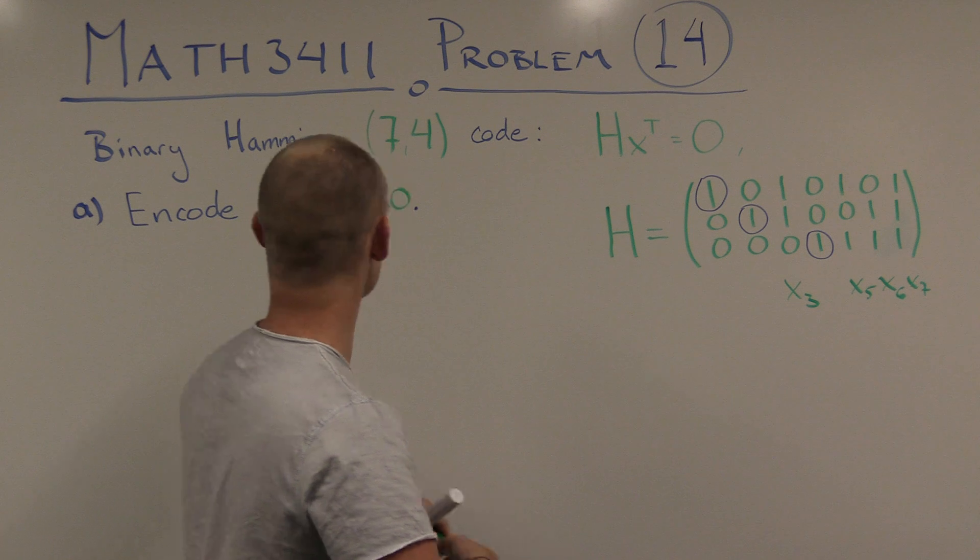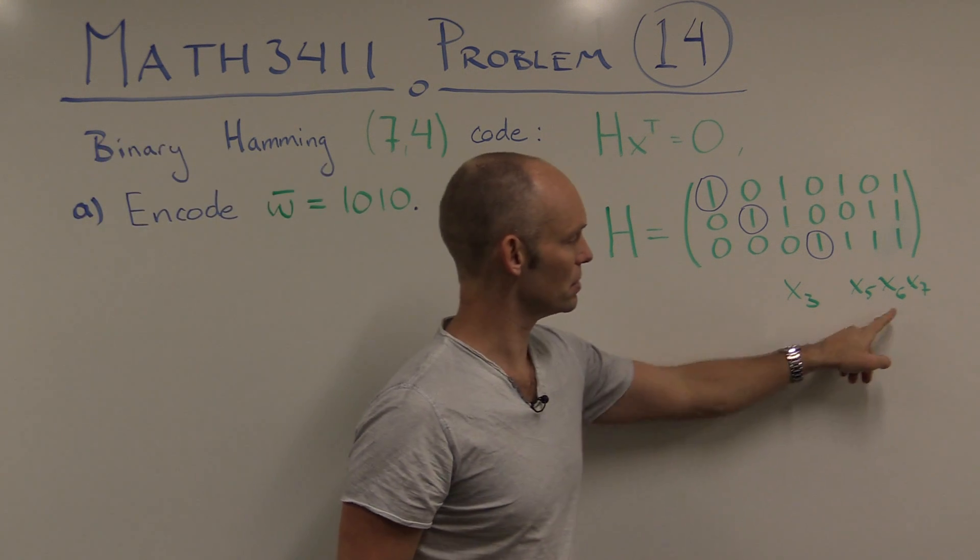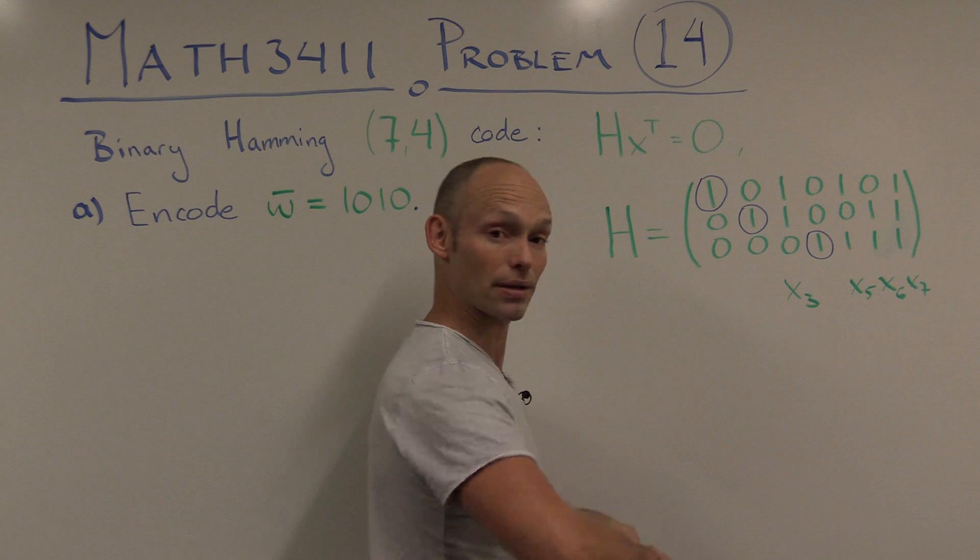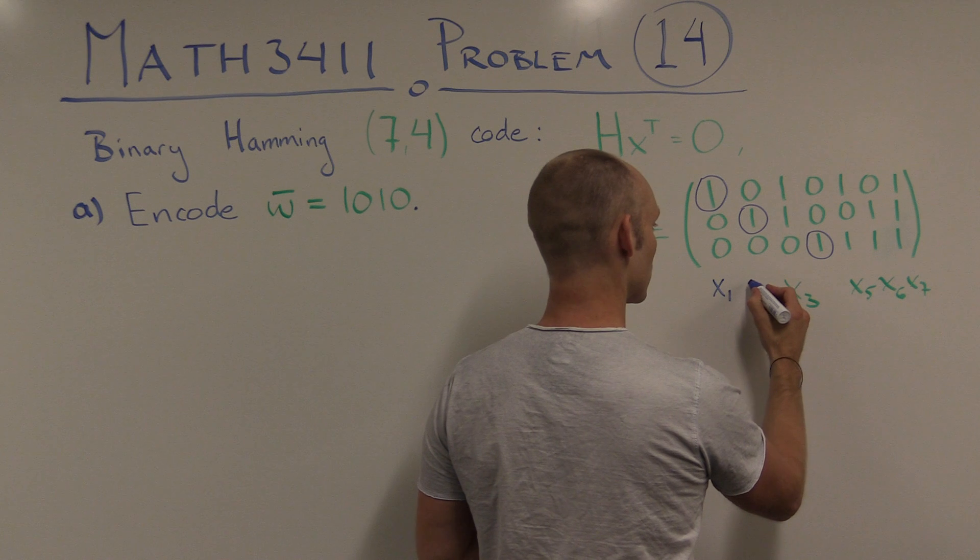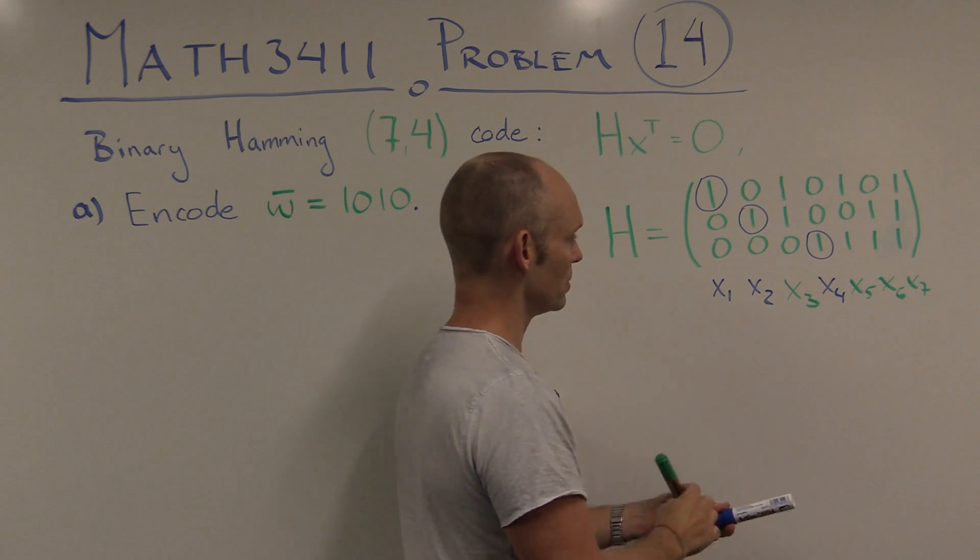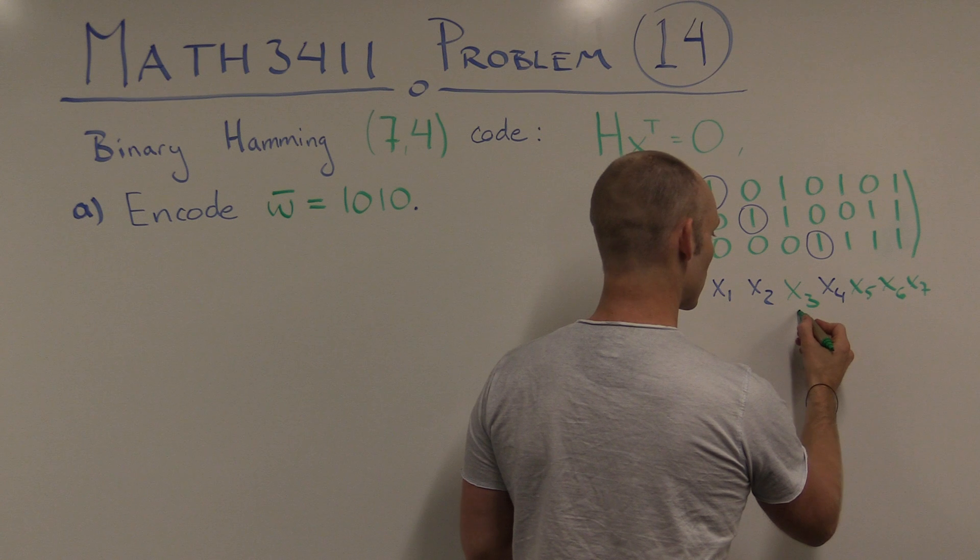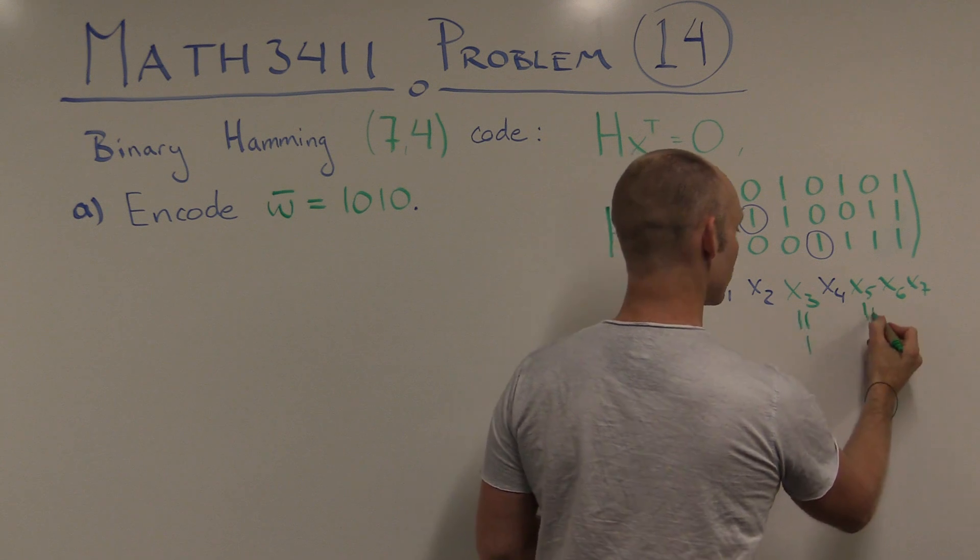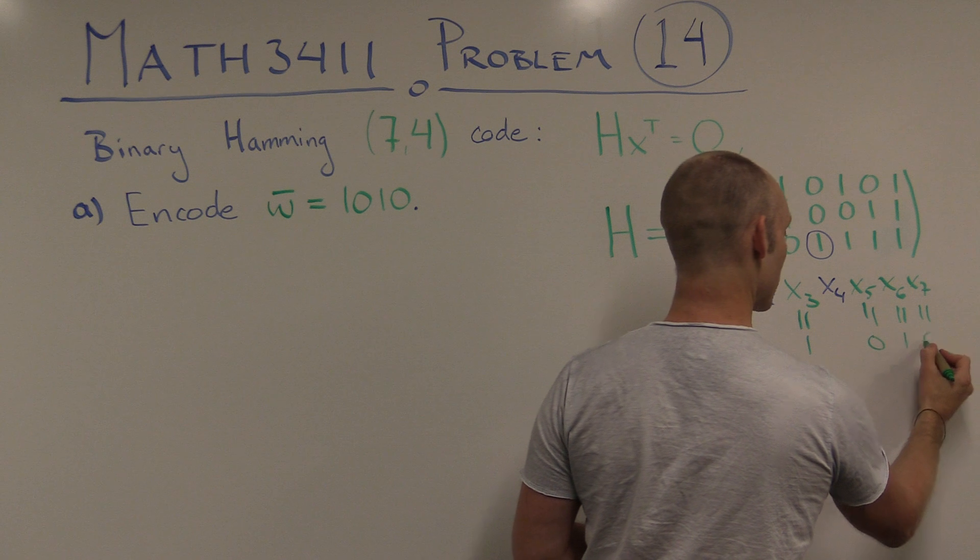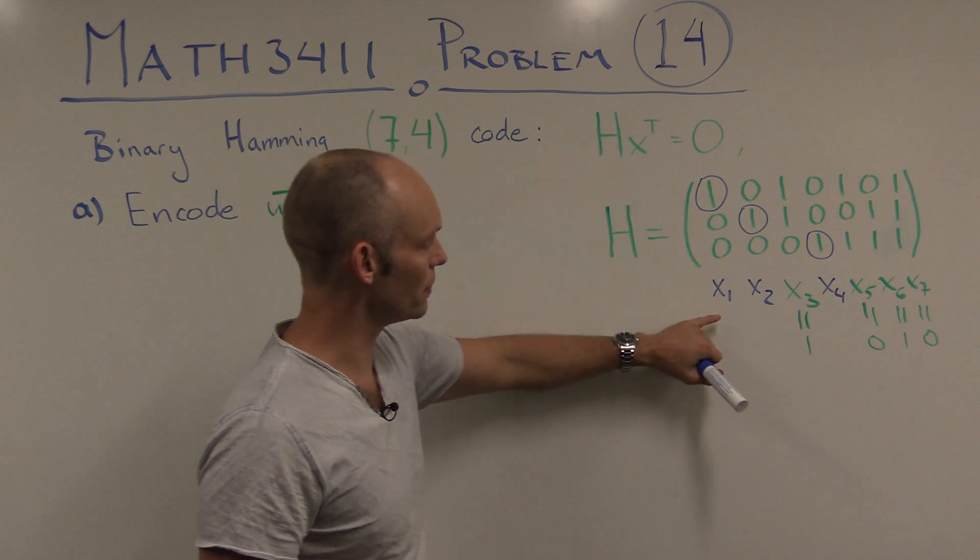So what we do to encode this message here is to assign these 4 values to these 4 variables, and then solve this equation to get x1, 2, and 4. So x1, x2, and x4 are the ones that we want to find out. So x3 was equal to 1, x5 was equal to 0, x6 was equal to 1, and x7 was equal to 0 again.